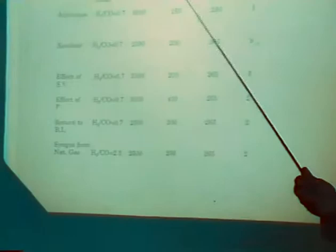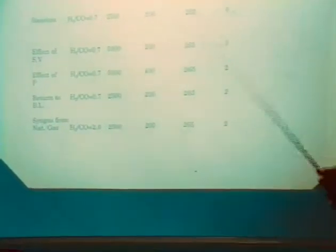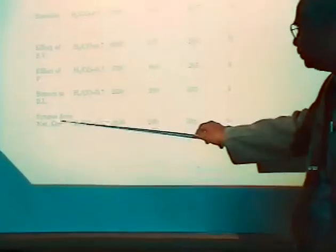After the baseline condition run is over, they have changed the run parameters to see the effect on the product distribution. At this point, they changed the space velocity from 2,500 to 5,000, keeping other parameters constant, and that run was taken for three days. At the end of three days, the pressure was changed from 200 to 400 psi, maintaining the same space velocity and temperature. At that stage, it was run for two days. At the end of two days, they have returned all the parameters to the baseline parameters to see whether the product distribution will get back to what was at the beginning. Subsequent to this, the syngas ratio was changed from 0.67 to 2.